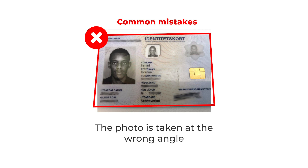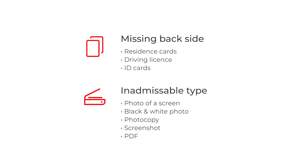4. The document image might be skewed — the optimal position of the camera is right above the document. Other reasons why your document may be rejected: 1. Missing backside of the document. Documents such as driving license, residence cards, or national IDs require photos of both front and backside of the document unless all the identifying information appears on only one side.